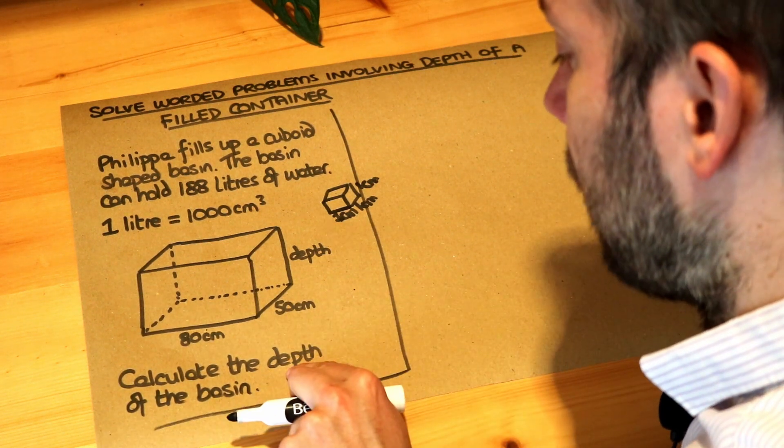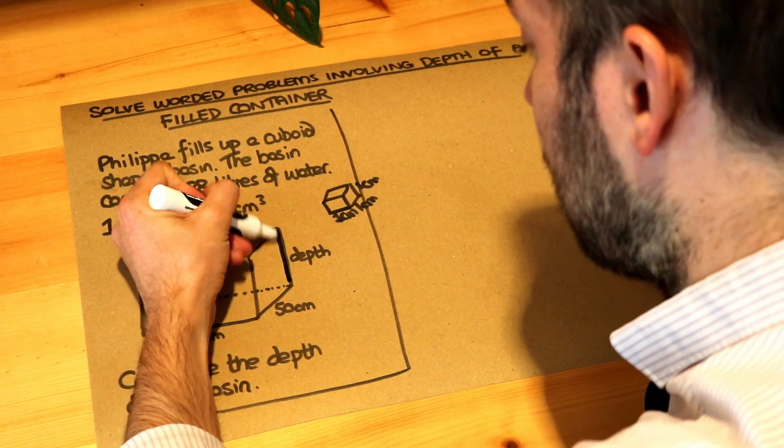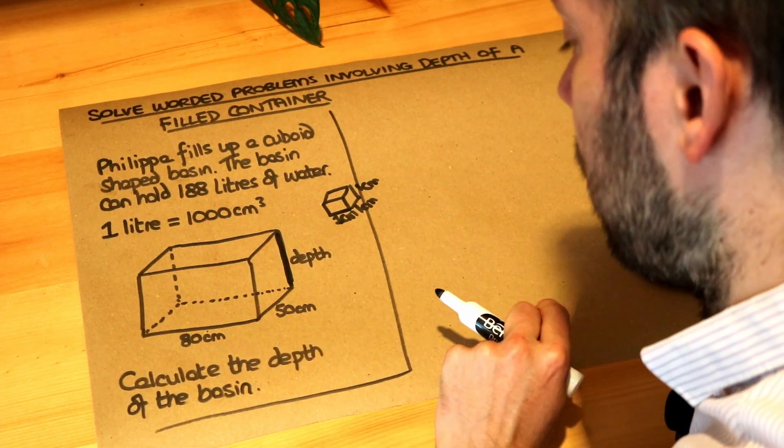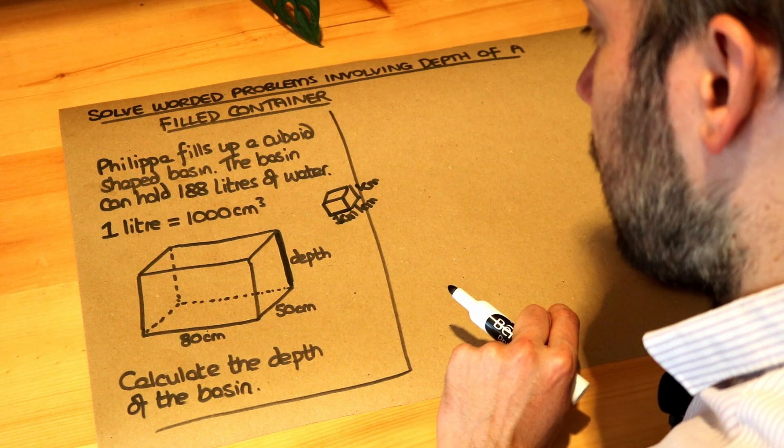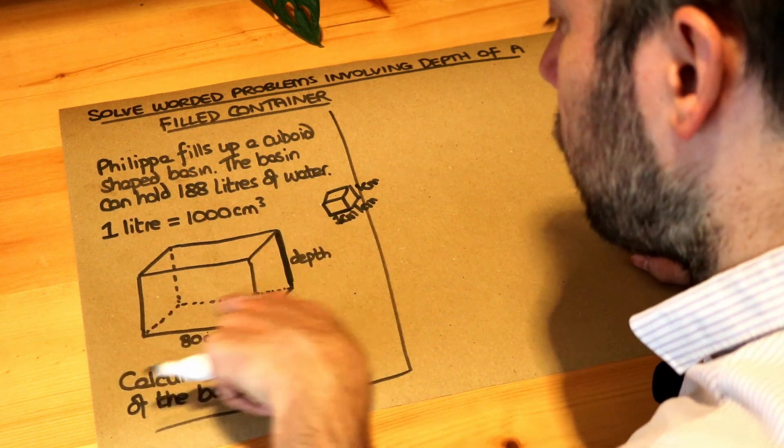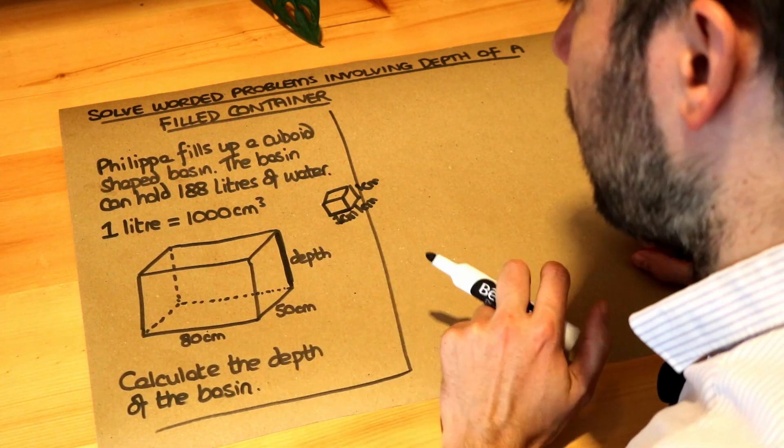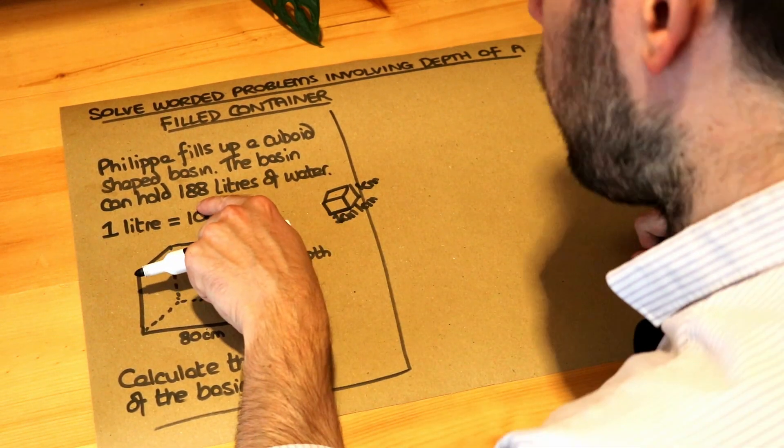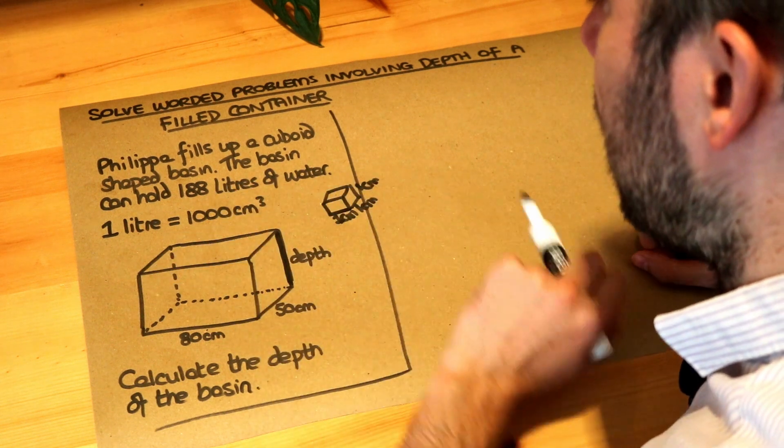Now we want to calculate the depth of the basin. Remember the depth is how deep it is from the top of the basin to the bottom of the basin. Now we're told the total capacity of the basin is 188 litres. That's another way of saying the volume of the water in the basin.